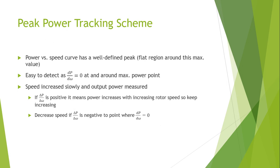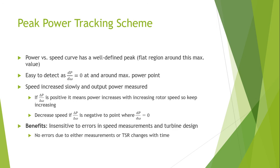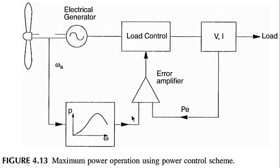If the slope is positive, it means power is increasing with increase in rotor speed. If the slope is negative, it means power is decreasing with increase in rotor speed. At maximum power, the first derivative of power with respect to speed equals zero. The benefit of this technique is that it is insensitive to errors in speed measurements and turbine design, so there are no errors during measurement of tip speed ratio changes over time.